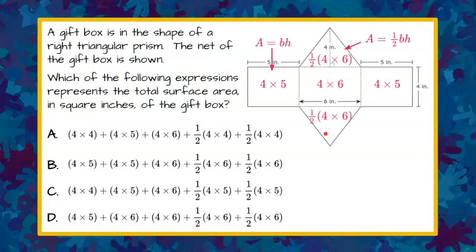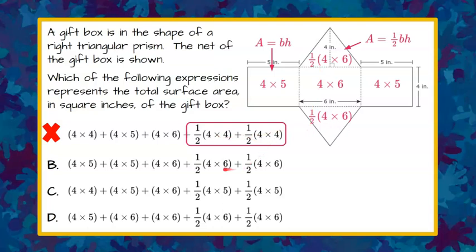Now we need to look at our answer choices. When I do so, I look at these triangles and they say four by four. So I'm already identifying that our two triangles are one half times four by six, so I know it can't be that answer.